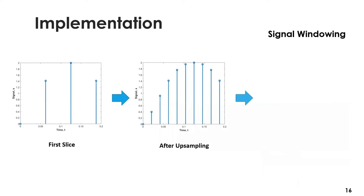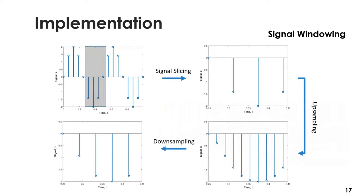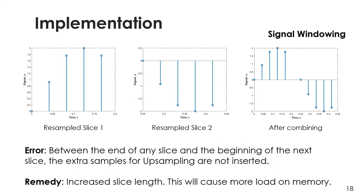The first slice is shown, and we perform upsampling and downsampling on this slice. Similarly, we take the next slice, perform the same operations, and append the output to the end of the resampled version of the first slice. We keep resampling and appending slices until the end of the signal. However, between the end of any slice and the beginning of the next, the extra samples for upsampling are not inserted, which is a source of error. This error can be minimized with a sufficiently large slice length — for our purpose we kept the slice length at 800, so the error is not significant.